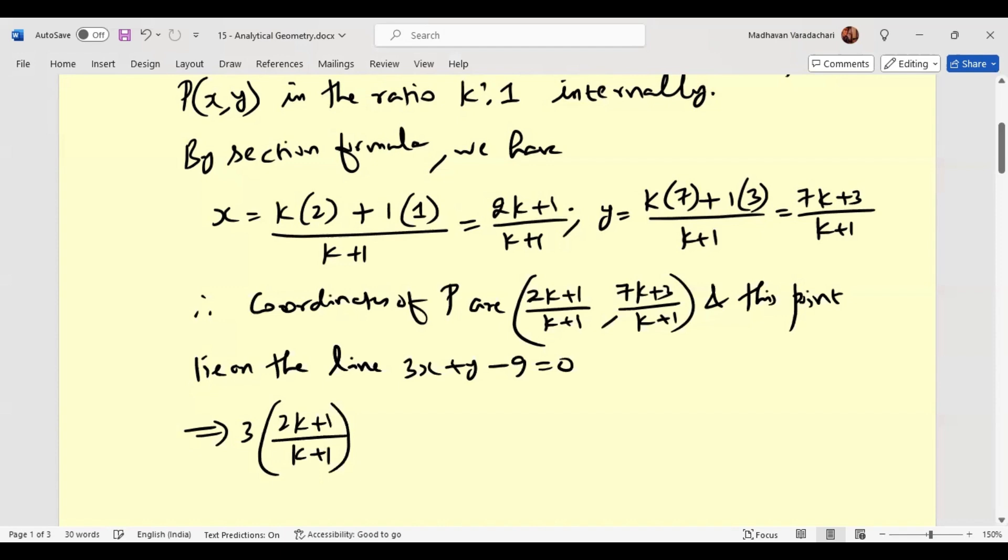plus y, that is (7k plus 3) by (k plus 1). So let us expand it. 3 into 2k becomes 6k, 3 into 1 is 3 plus 7k plus 3.